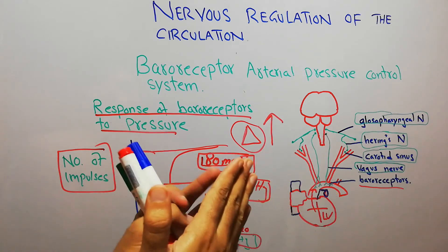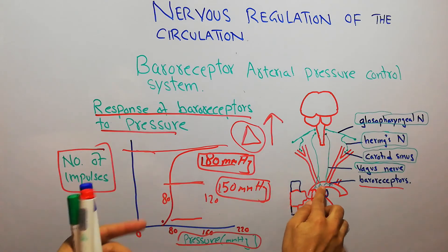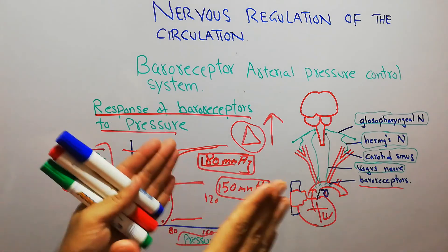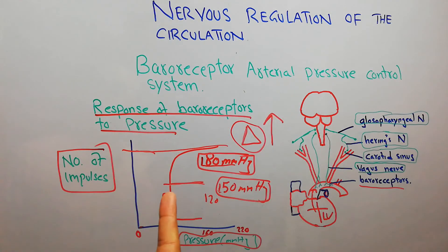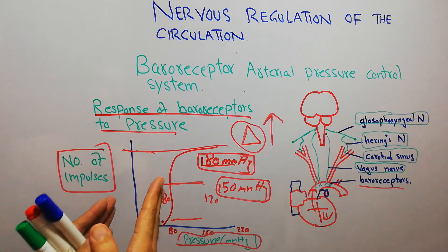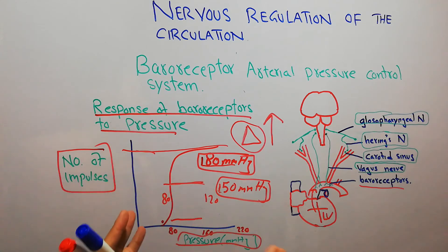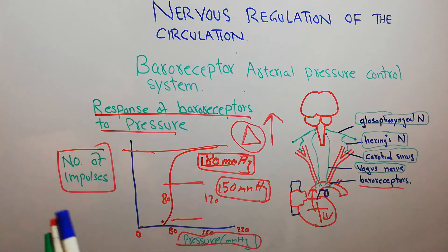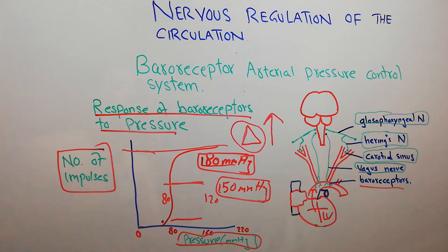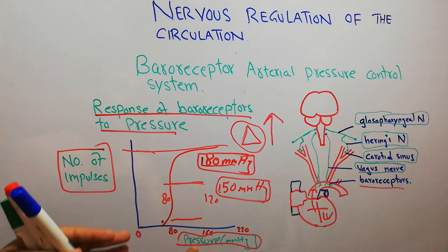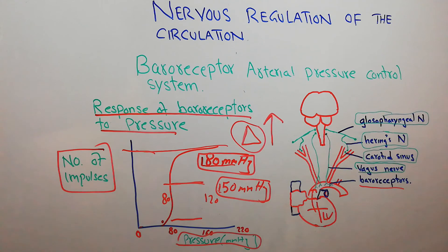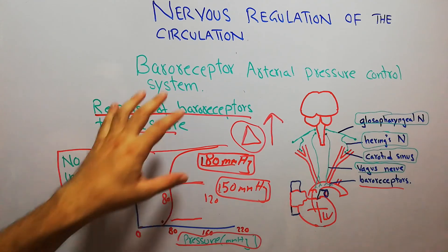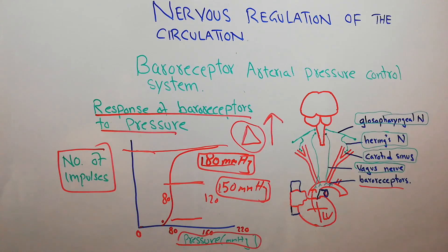Because baroreceptors are stretch receptors, more pressure causes more arterial stretch, and more stretch causes more impulses to be carried to the brain. The number of impulses is greatest in the normal range of 80 to 120 mmHg — the body tries to keep arterial pressure in this range. Impulses are carried more when there is a rapid change at a higher pressure level, so if pressure is maintained at 150–160 mmHg and starts rapidly increasing, the number of impulses will increase more and more. That's all about baroreceptor response to pressure.